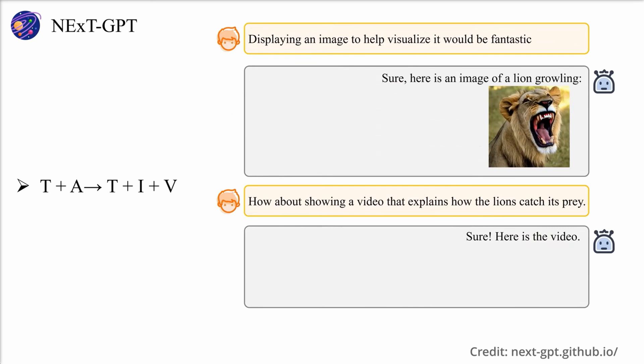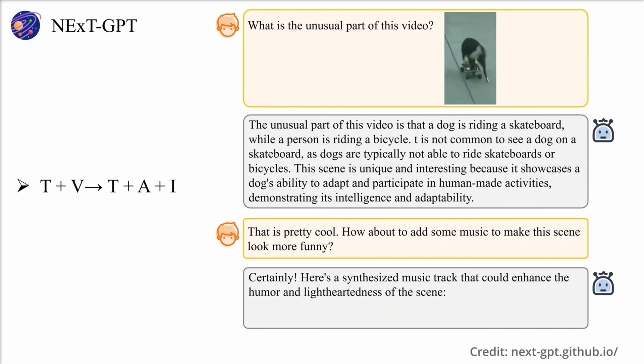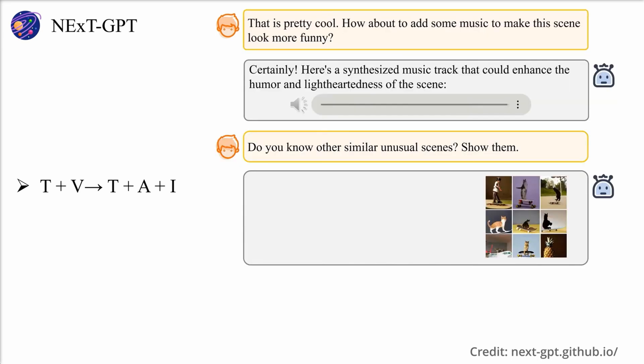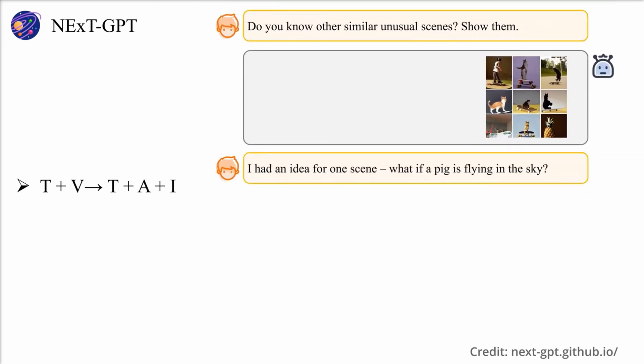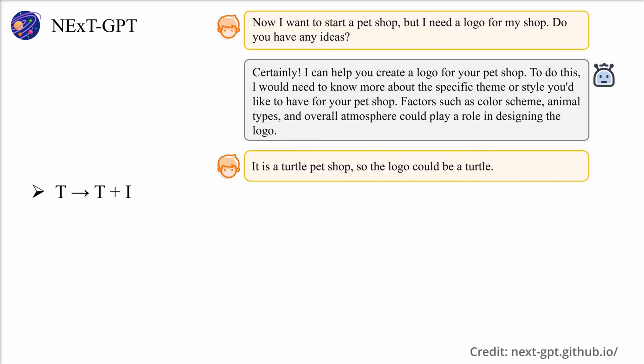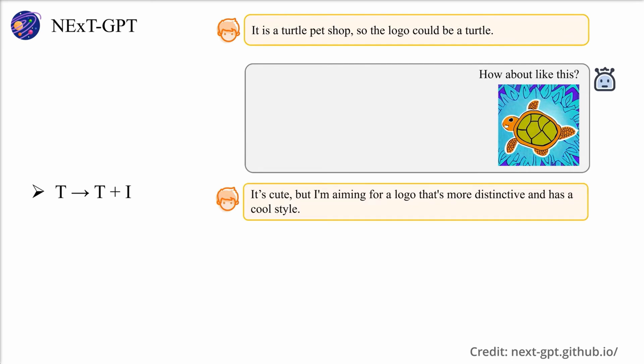This is where NextGPT comes in to transcend these limitations, functioning as a comprehensive system that connects an LLM with multimodal adapters and various diffusion decoders. As a result, it enables perception and generation of inputs and outputs across text, images, videos and audio, marking a significant stride towards more anthropomorphic AI research.